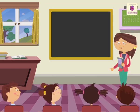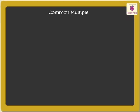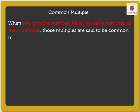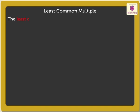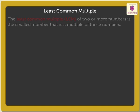Today, let us learn about the least common multiple, or LCM. Let us understand the meaning of the term common multiple. When two or more numbers have the same numbers as their multiples, those multiples are said to be common multiples. The least common multiple of two or more numbers is the smallest number that is a multiple of those numbers. To understand it better, let us solve an example.